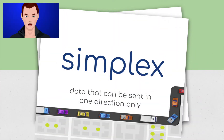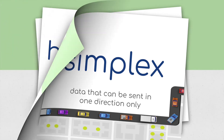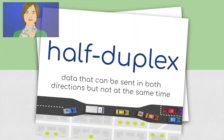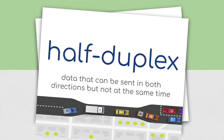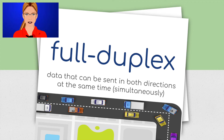Simplex: data that can be sent in one direction only. Half duplex: data that can be sent in both directions but not at the same time. Full duplex: data that can be sent in both directions at the same time, simultaneously.